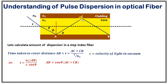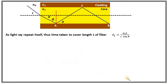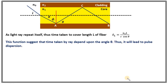By drawing a perpendicular from C to AB, you get two triangles. From the left triangle, half of AB equals AC cos theta; from the right, half of AB equals BC cos theta. Adding them gives AB. So the time taken by light to cover distance AB is derived. Since the light ray repeats itself as it propagates, the total time to cover a length L of fiber is TL equals N1 L upon C cos theta. TL depends on theta, which depends on i, so depending on the angle of incidence, light takes different times to travel through the optical core, leading to pulse dispersion.